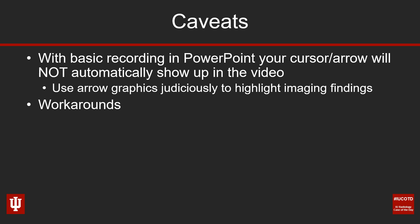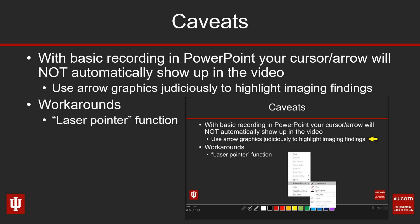That said, there are some workarounds. There's something called the laser pointer function. When you go back to that presentation mode as you're recording your video, if you right-click on the screen it's going to pop up some boxes. Hover down to Pointer Options and it gives you the option for the laser pointer. That's actually going to default to staying on — so you could kick it on at the beginning of your presentation and anywhere you go on screen the laser pointer will follow you. It's a little challenging as you're trying to advance slides, but if you really want to highlight something without putting an arrow in, you can use that laser pointer functionality.